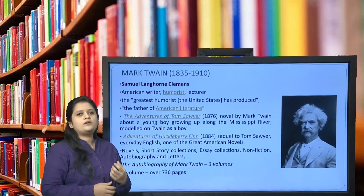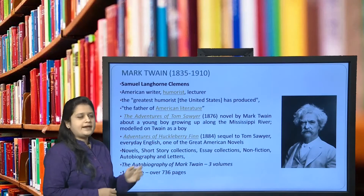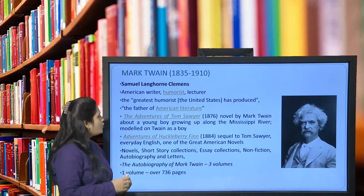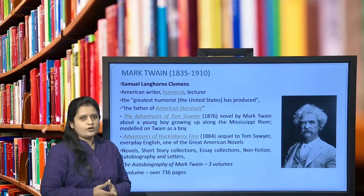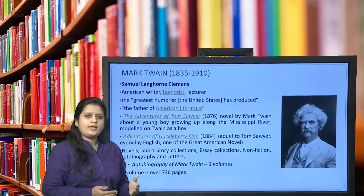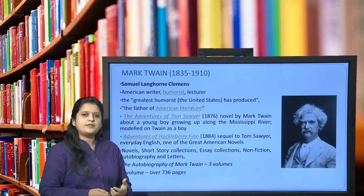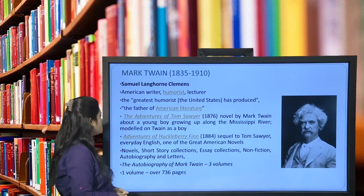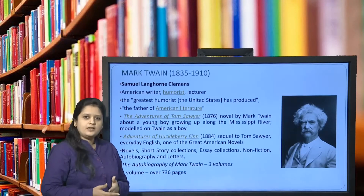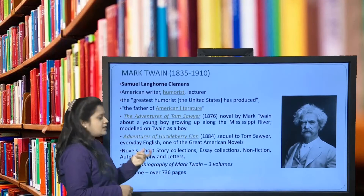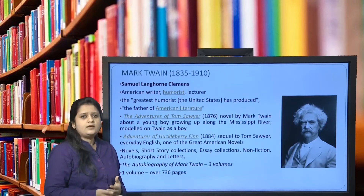Some of his famous literary works include the novel The Adventures of Tom Sawyer, published in 1876. It is about a young boy growing up along the Mississippi River and is said to have been modeled on Twain as a boy — reflecting elements of his own childhood, though it's not an autobiography. Followed in 1884 by Adventures of Huckleberry Finn, also known as Huck Finn, a sequel to Tom Sawyer and regarded as one of the great American novels ever written.